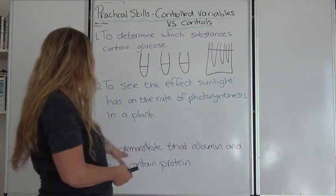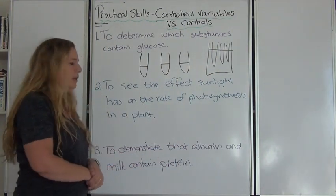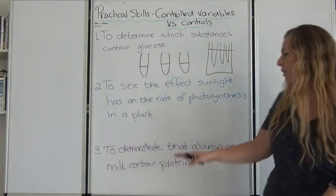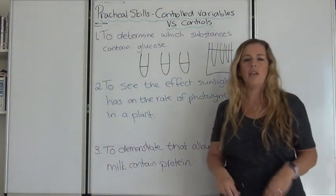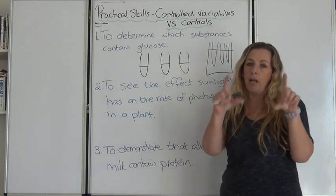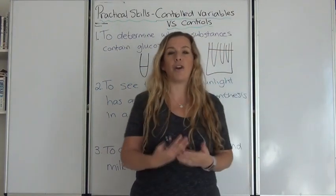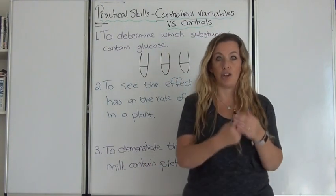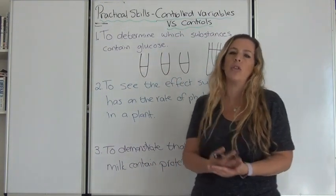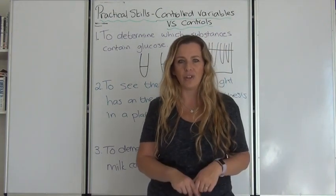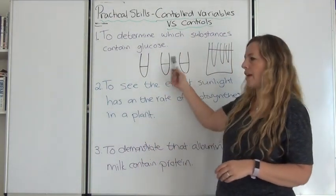And here we go again, to demonstrate that albumin and milk contain proteins. What are the controlled variables? It's very similar to the first one. The same volume of milk and albumin. The same volume of the biuret test of copper sulfate and sodium hydroxide. You always control things using a measuring cylinder or a syringe depending on what apparatus you have.